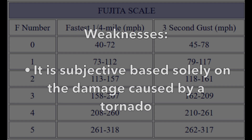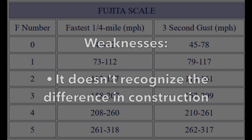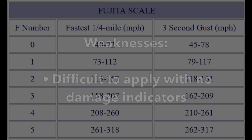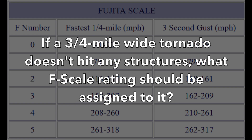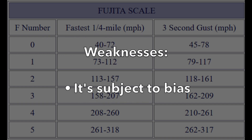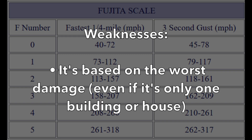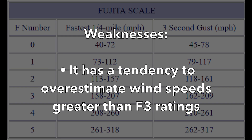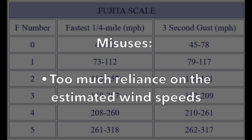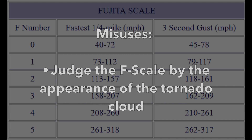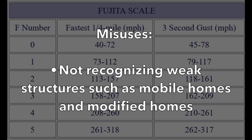Over the years as they applied the F scale, they found some weaknesses. It is subjective and based solely on the damage caused. It doesn't recognize differences in construction quality. It's difficult to apply with no damage indicators — for example, if a three-quarter-mile-wide tornado doesn't hit any structures, what rating should be assigned? It's subject to bias based on the worst damage even if it's only one building, and it tends to overestimate wind speeds for ratings greater than F3. Misuses included too much reliance on estimated wind speeds and judging the F scale by the appearance of the tornado cloud.